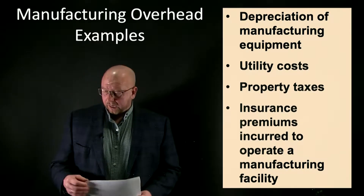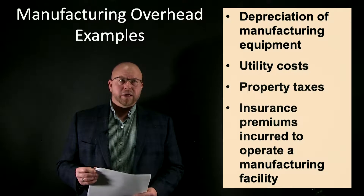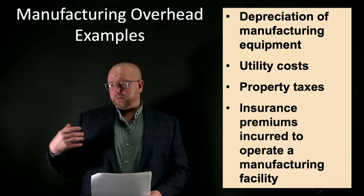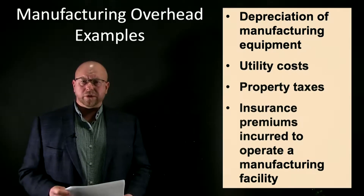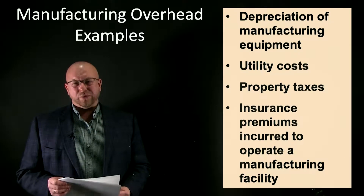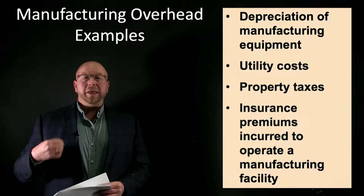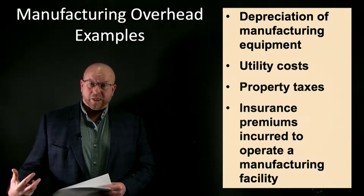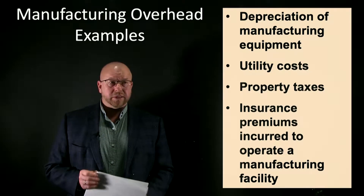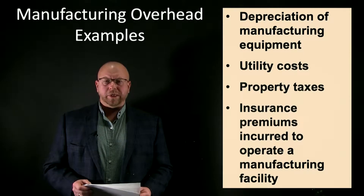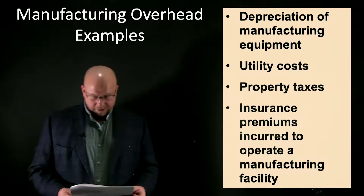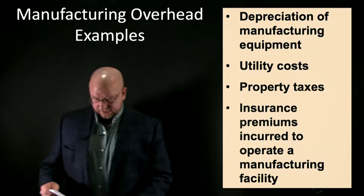Some examples of manufacturing overhead — and this is an abbreviated list — include depreciation on equipment. A front end loader on a construction job might work 40, 80, or 120 hours on a particular job and then be deployed to a different job, so it's not easy to trace that equipment cost to a particular job. Utility costs like electricity, gas, and water in a manufacturing facility are also difficult to trace, and the same is true for general overhead like property taxes and insurance premiums.